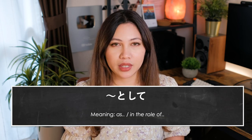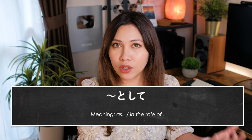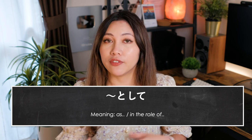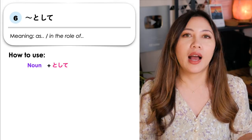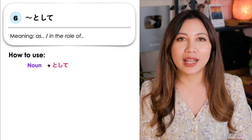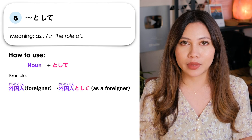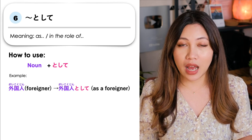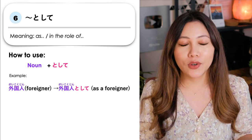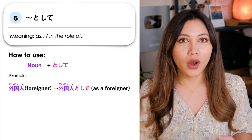Our first grammar point is nani-nani toshite. The noun toshite pattern indicates the position, role, or function of a noun. This means 'as noun' or 'in the role of noun.' We simply add toshite after a noun. For example, gaikokujin — a foreigner — gaikokujin toshite means 'as a foreigner.'